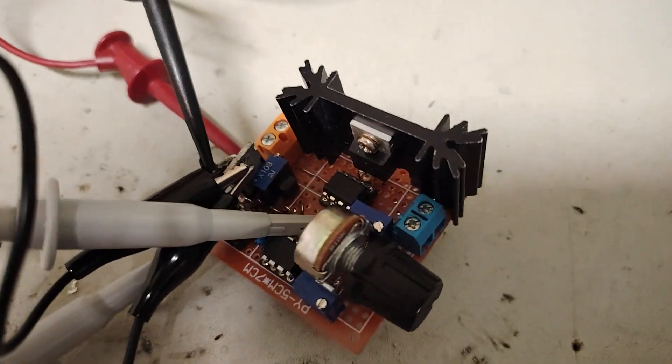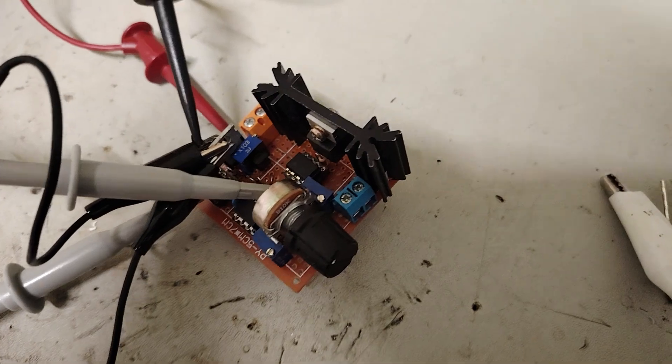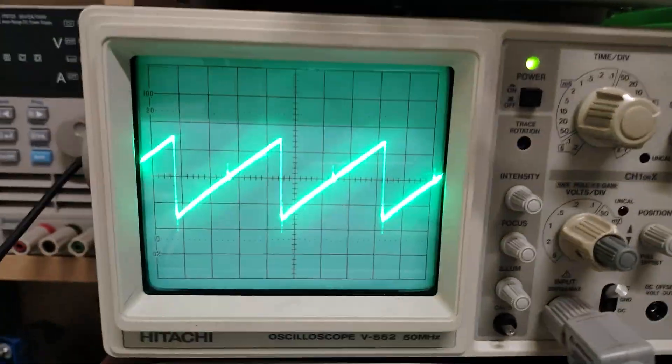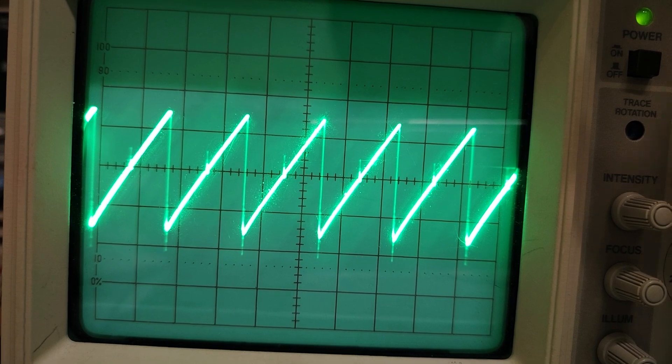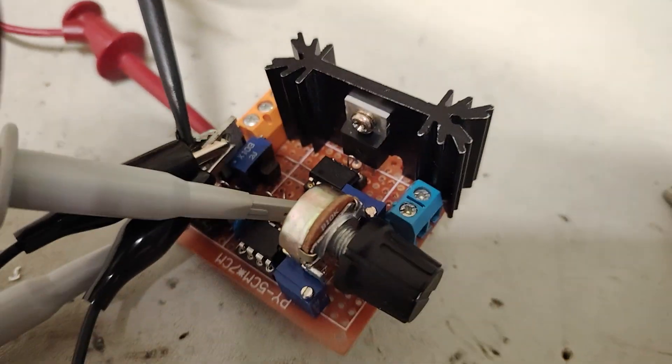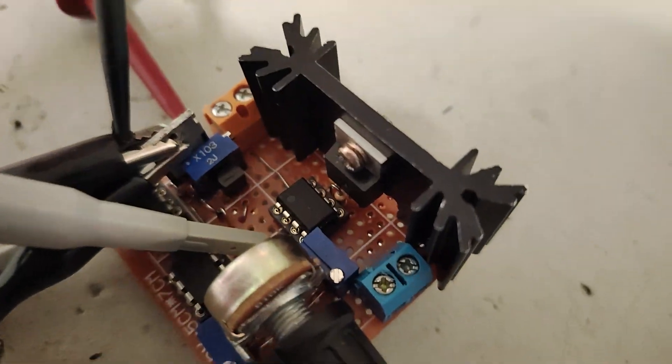And here's another thing the 555 timer can do, which I haven't actually shown you guys yet, is make a sawtooth signal. Look how perfect that is. Just move the wires out of the way. Look at that. That is quite a good sawtooth signal. And of course, schematics will be posted in my community tab if you want to see them.